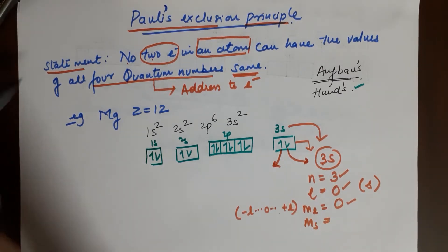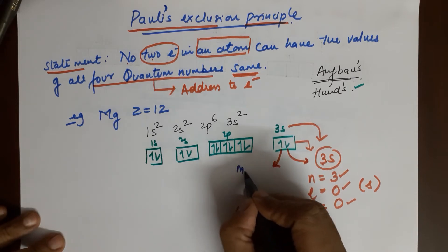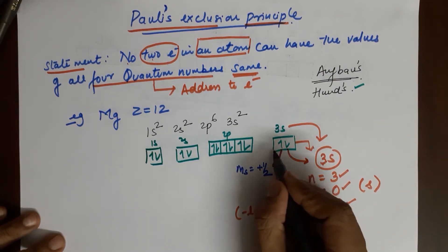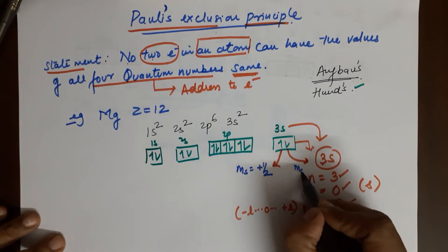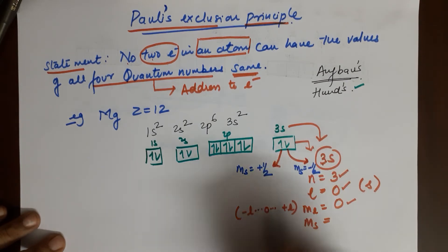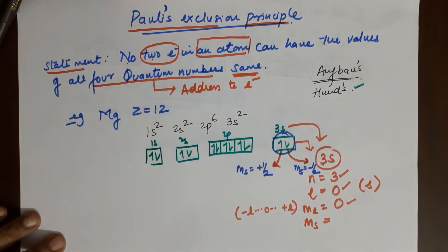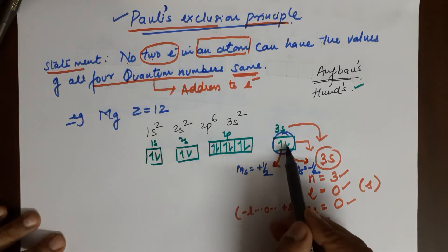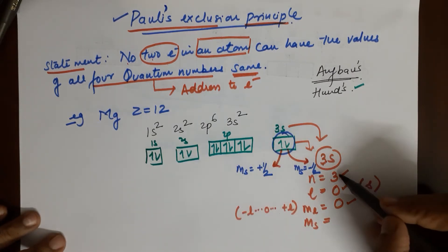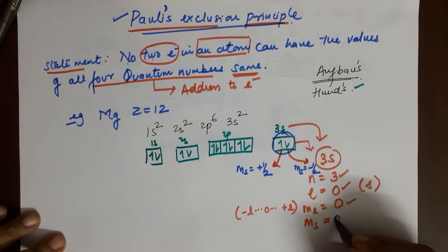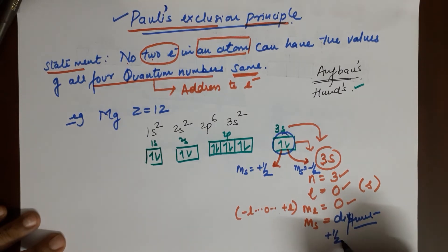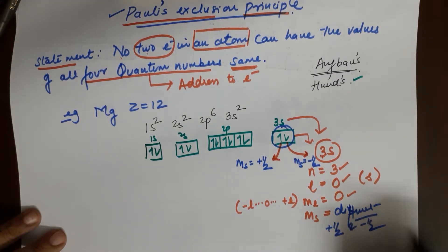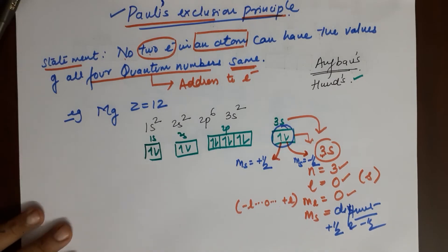What are we left with? The spin value — and that is where they differ. This particular electron has ms = +½ because it is clockwise, while the other electron has ms = −½. So these two electrons are in accordance with Pauli's Exclusion Principle: despite having the same n, l, and ml values, their ms values are different — one is +½ and the other is −½.